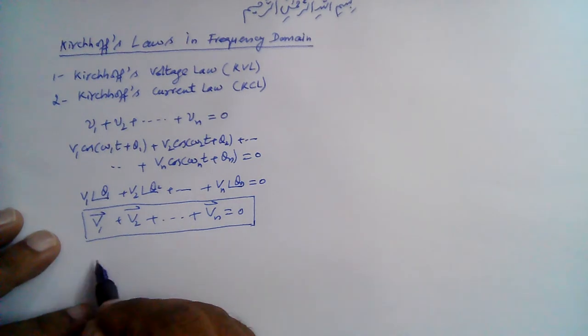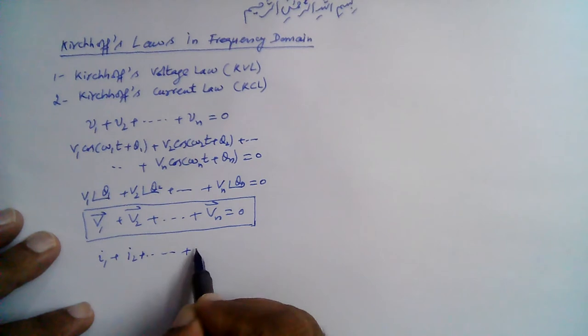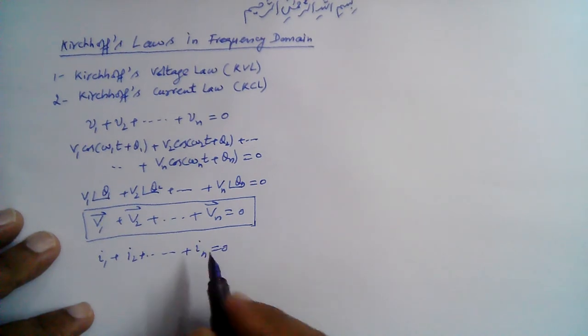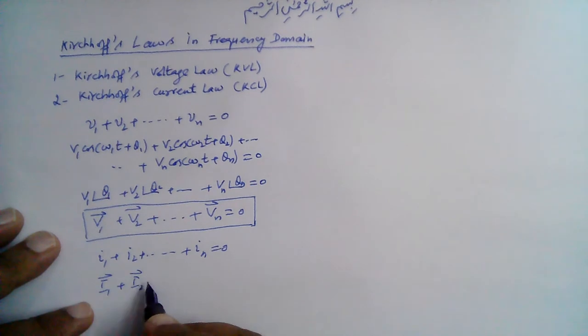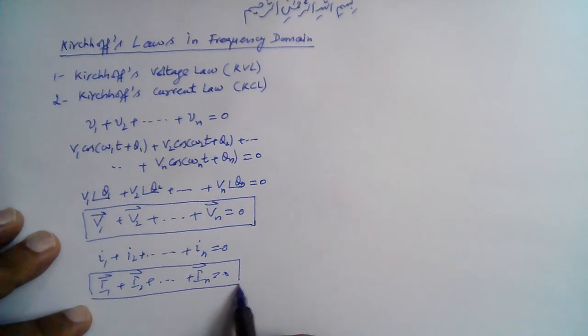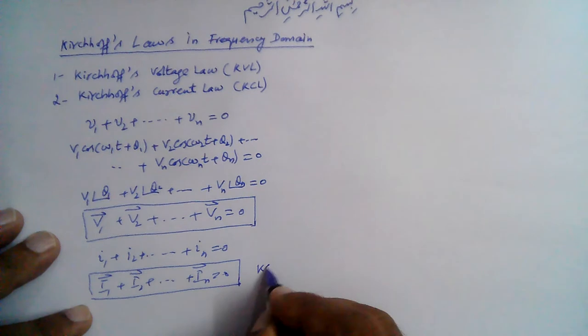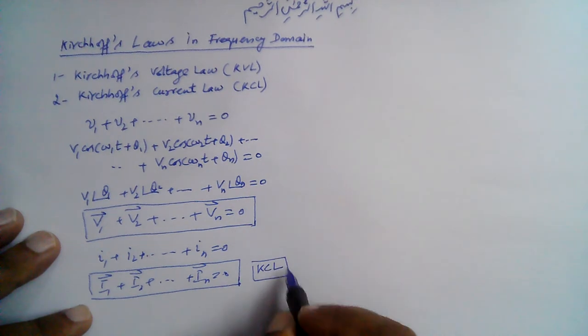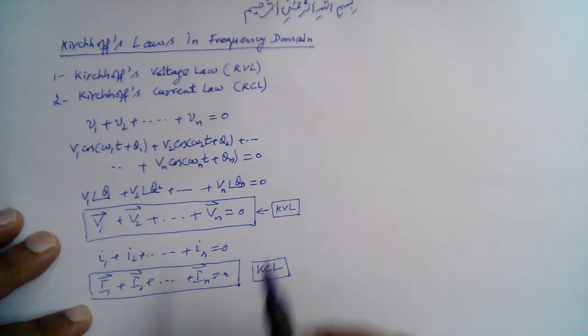In the time domain, we have I1 plus I2 and so on. In the phasor domain, Ī₁ plus Ī₂ and so on equals zero. This is Kirchhoff's Current Law in the frequency domain, this is KCL.